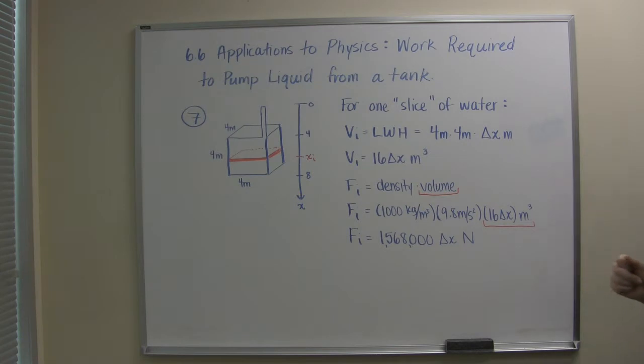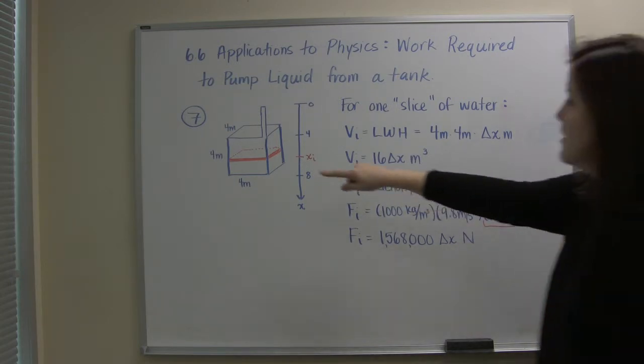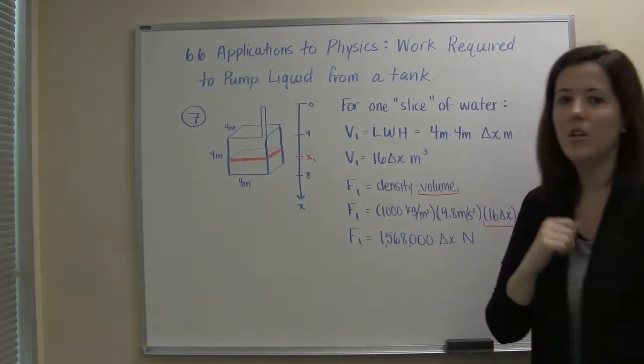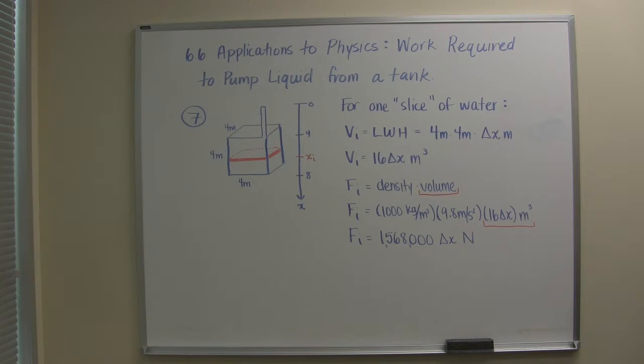And remember we want to think about this as a Riemann sum. So we want to be able to calculate the volume and the force of the weight on one slice of water and we want to think about taking this slice of water and lifting it up and out of the tank. And then we're going to use Riemann ideals to figure out how we could do that for all of the slices that are in the tank. So let's look at this setup.